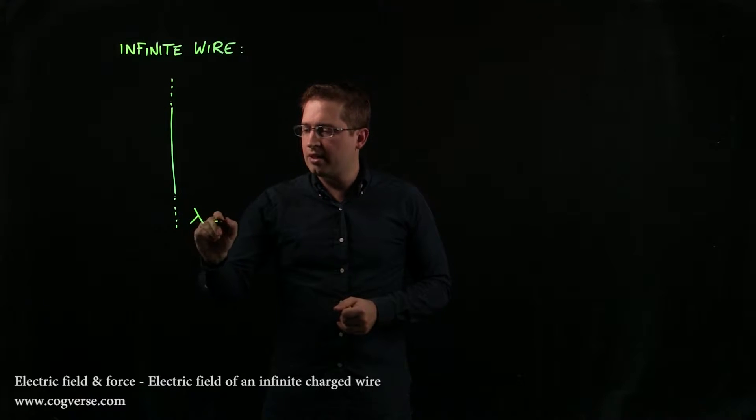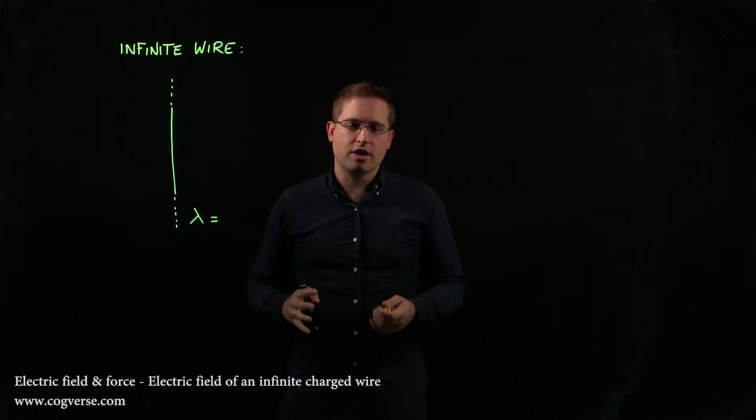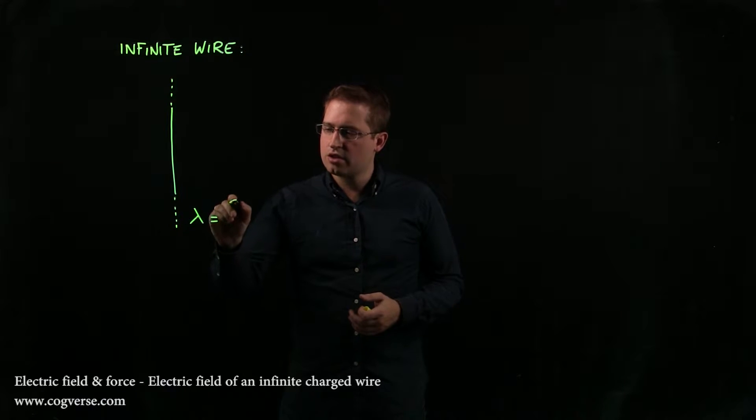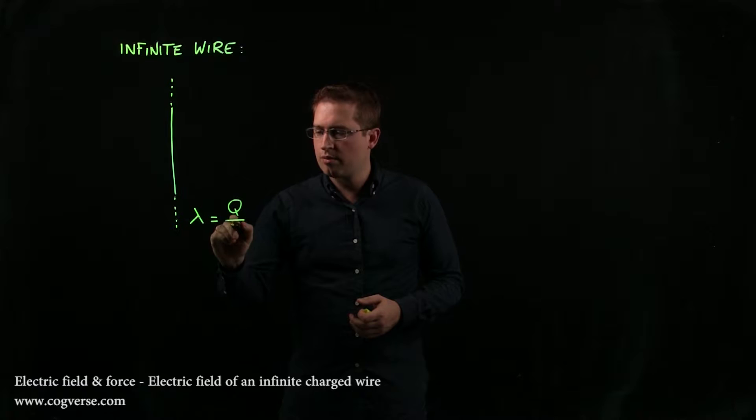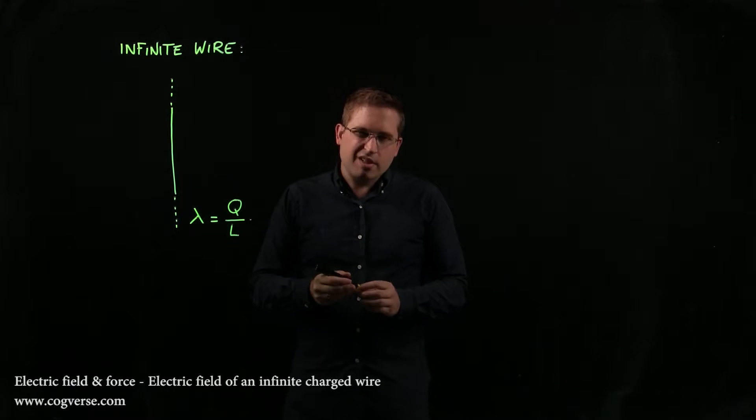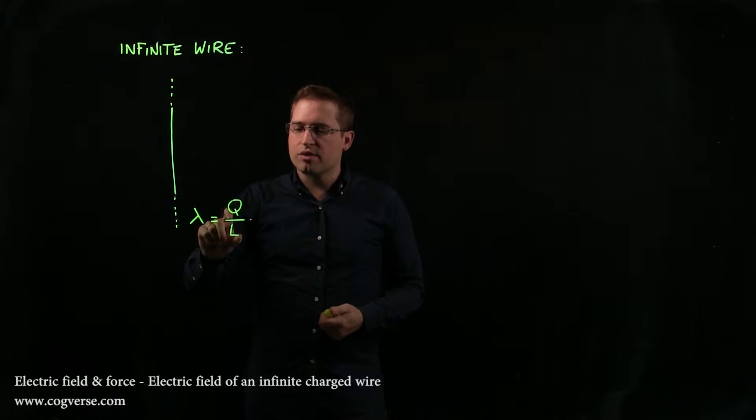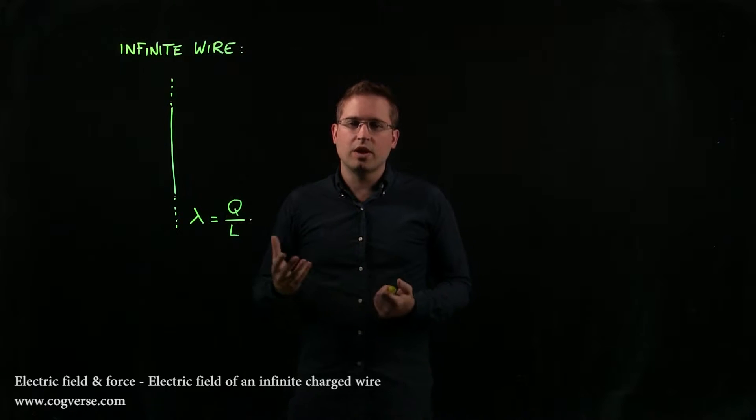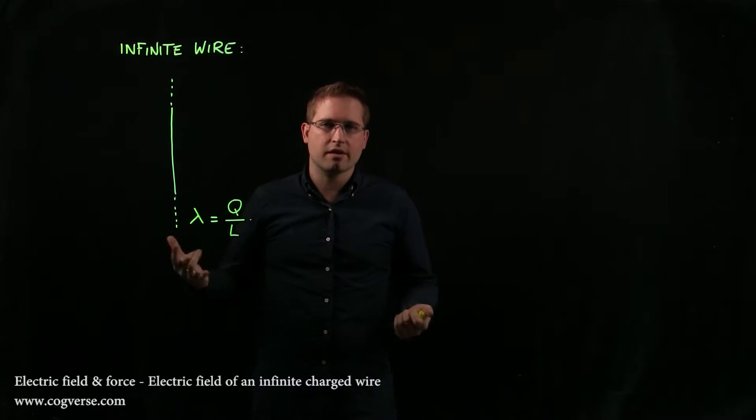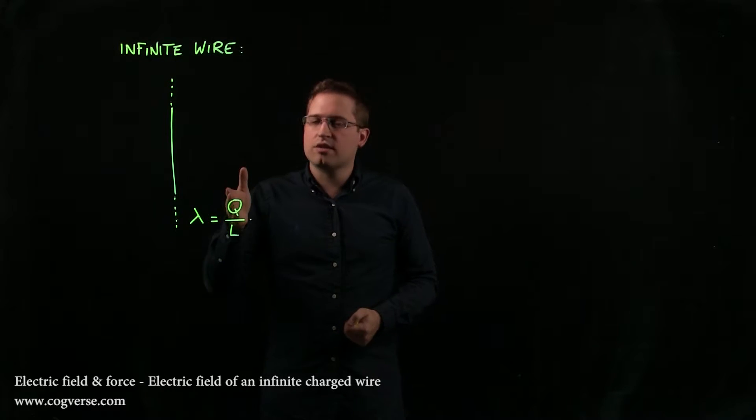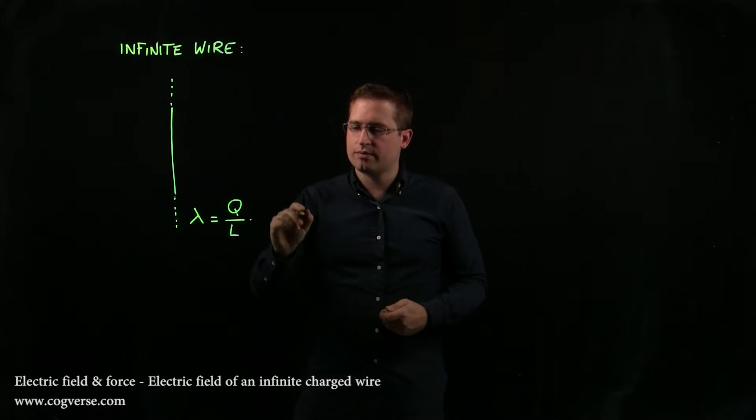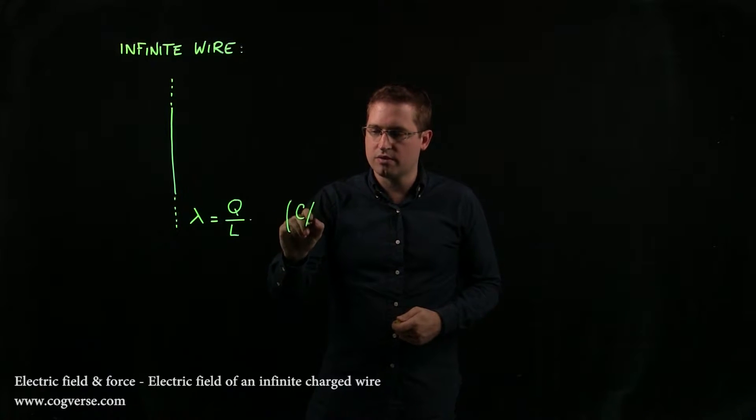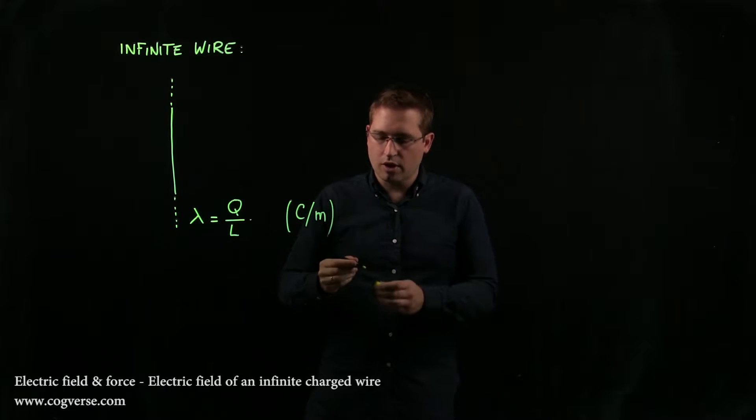Well, what we do is we define lambda, which is a linear charge density, and that is charge per length. Still seems weird because it's an infinite wire, so what length are we talking about? Well, we're talking about, say, this length. In other words, let's say that this is 3 coulomb per meter. Incidentally, the units, of course, are coulomb per meter.